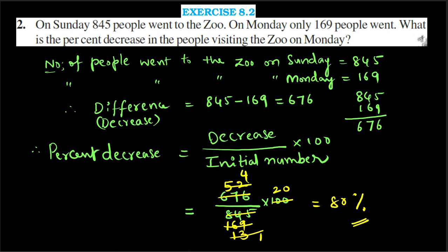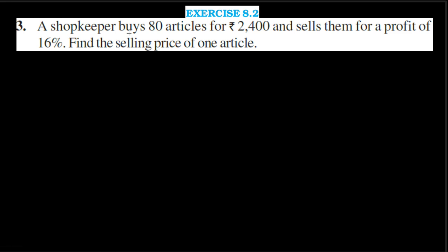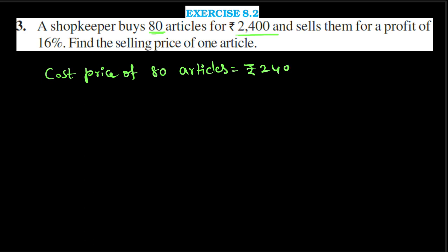Let us go to the third problem. A shopkeeper buys 80 articles for Rs. 2400 and sells them for a profit of 16%. Find the selling price of one article. Cost price of 80 articles equals Rs. 2400.